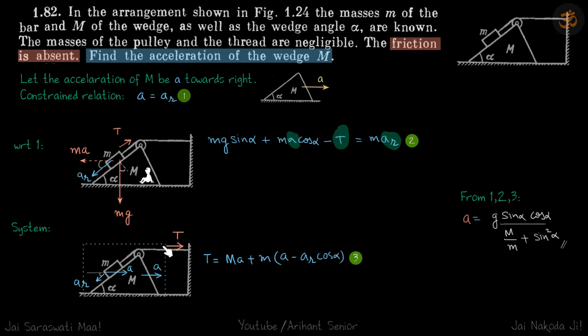And for the third equation, let's consider the whole thing as a system, because then we only need to deal with one force, tension. So we can write the tension on the system is m1a1 plus m2a2. So for wedge it will be M into a.